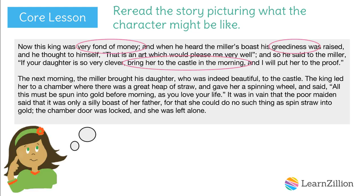The next morning, the miller brought his daughter, who was indeed beautiful, to the castle. The king led her to a chamber, where there was a great heap of straw, and gave her a spinning wheel, and said, All this must be spun into gold before morning, as you love your life. This sentence makes me picture a very cruel person. He will kill the daughter if she does not spin the straw into gold. It was in vain that the poor maiden said that it was only a silly boast of her father, for that she could do no such thing as spin straw into gold. The chamber door was locked, and she was left alone. Again, I picture a cruel king. He won't listen to anything the daughter has to say.